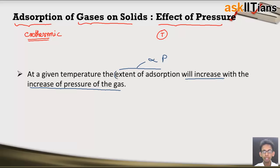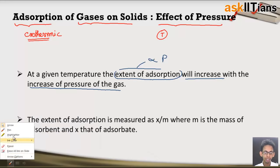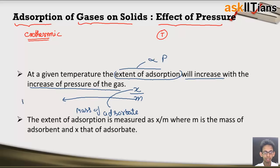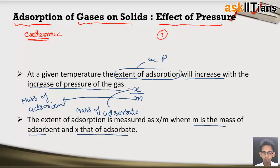The question is: how do we denote this extent of adsorption mathematically? It is denoted by the quantity x upon m. Here x is the mass of adsorbate and m is the mass of adsorbent. The ratio of these two masses, x upon m, is known as the extent of adsorption, and this extent of adsorption depends on pressure.